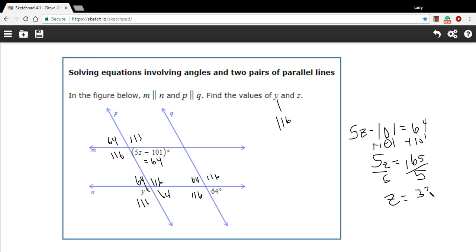Yeah, I think so. So z here equals 33. So that is a little bit of work with solving some equations in a figure of two sets of intersecting parallel lines.